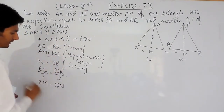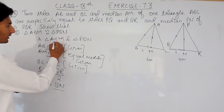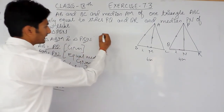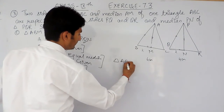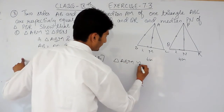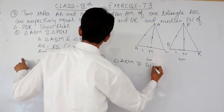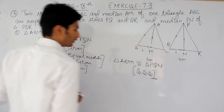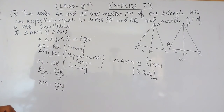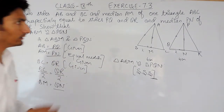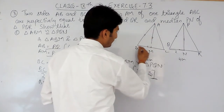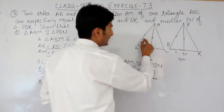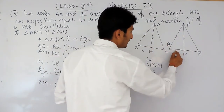By the first equation (AB = PQ), the second (AM = PN), and the third (BM = QN), we have proved that all three sides of triangle ABM are equal to all three sides of triangle PQN. So we can confirm that triangle ABM is congruent to triangle PQN by the side-side-side property of congruency. This is the answer.